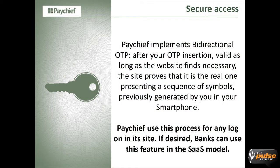Regarding secure access, PayShift implements something different for OTP — we have bi-directional OTPs. After you insert your one-time password, the system presents a sequence of symbols on the smartphone — in this case, fruits. These are to be answered by the site. So if I insert my password, the site tells me the counter-password. I will show you how it works. PayShift uses this process for any login on its own site, and banks can integrate very easily — they can use it as software as a service.